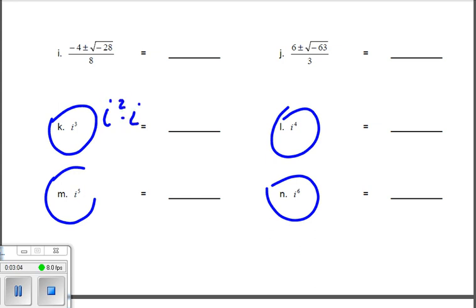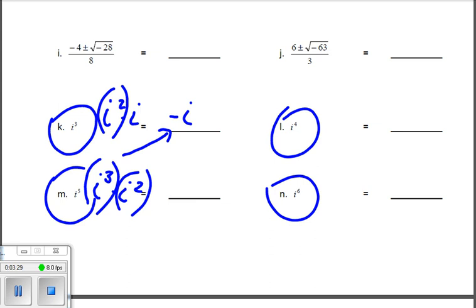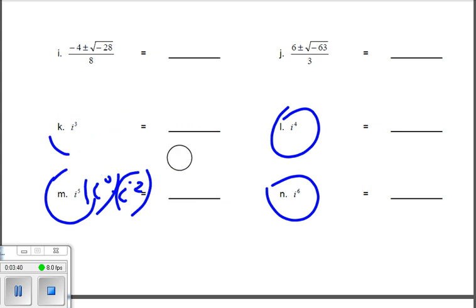What's i²? Negative 1. So what's the whole answer? Negative 1 times i, which makes negative i. This one, i⁵, I just figured out i³, so I might as well use i³ times i². I know i² is negative 1, i³ is negative i, so what's negative 1 times negative i? Positive i. That's how you do that kind—you break them into i²s, which you know are negative 1.